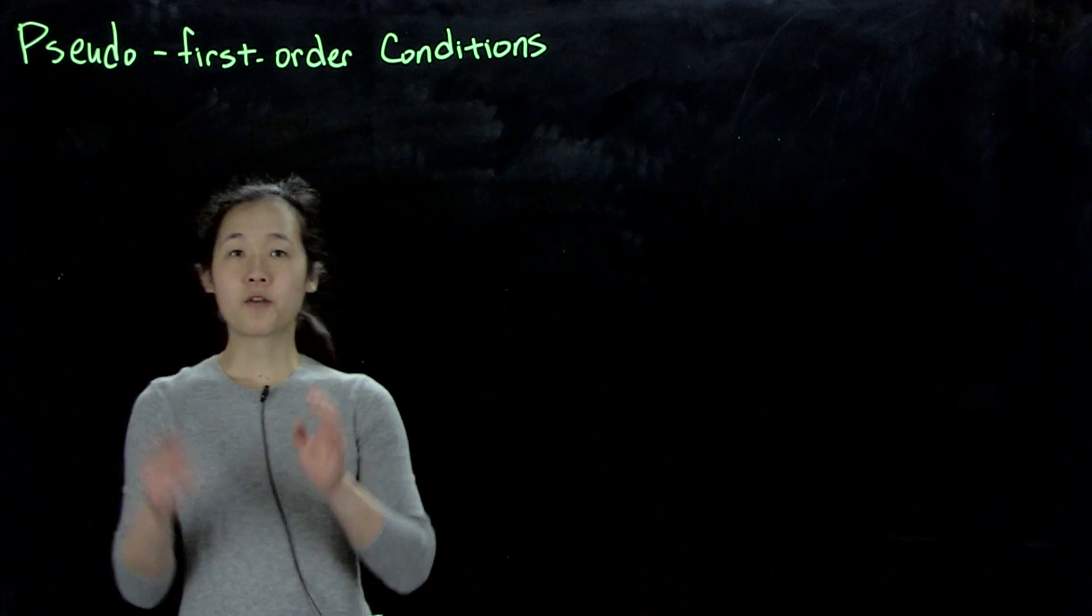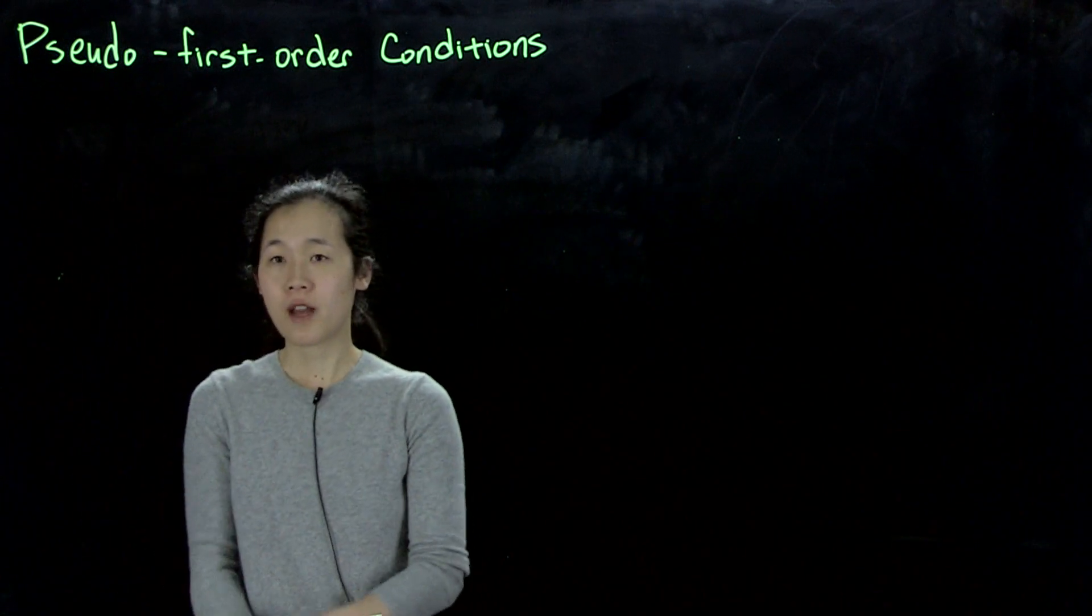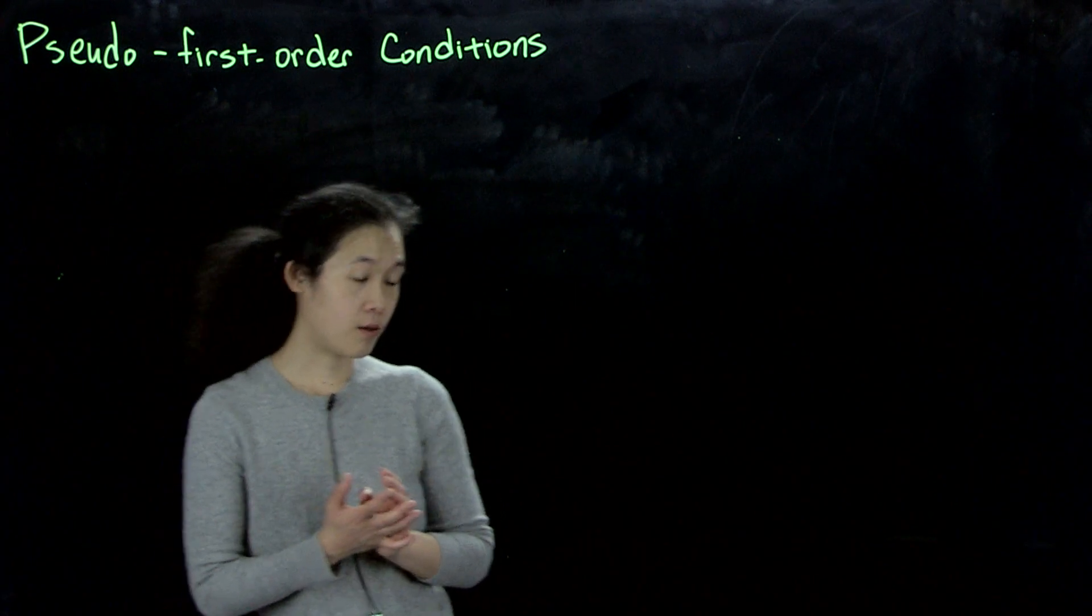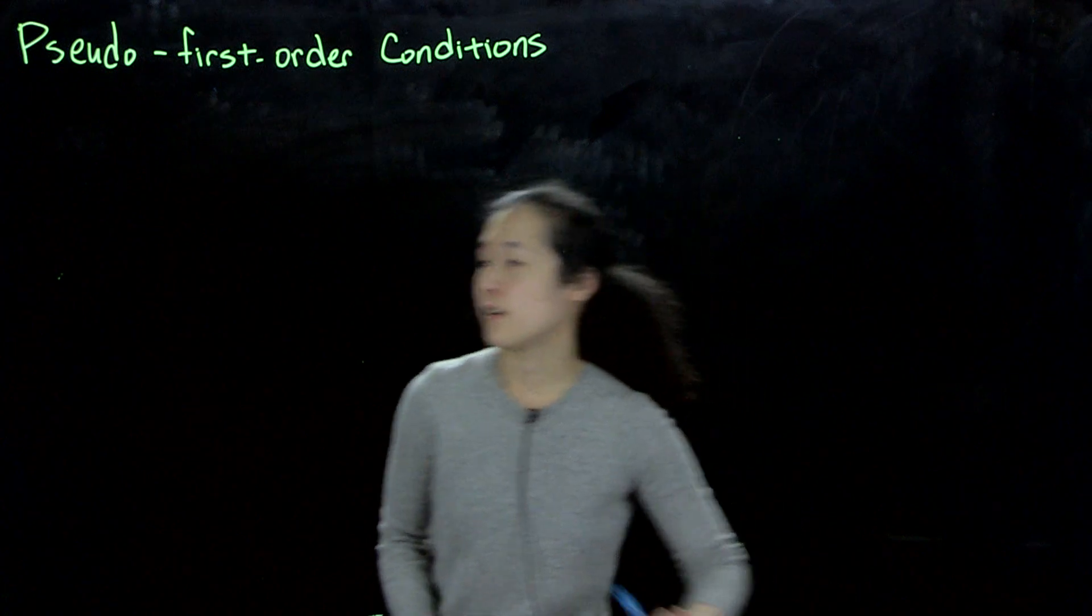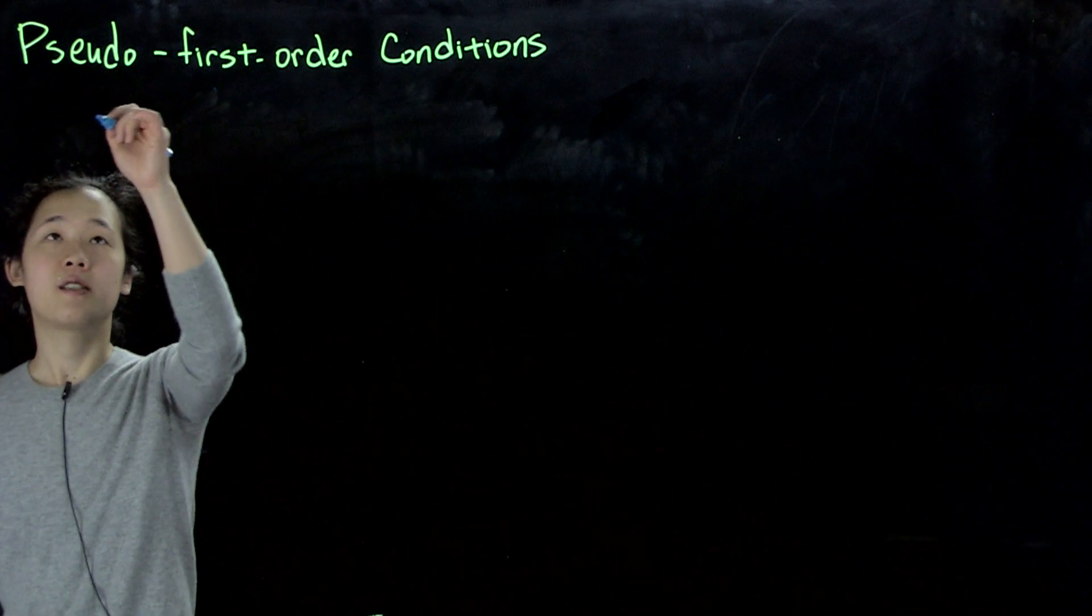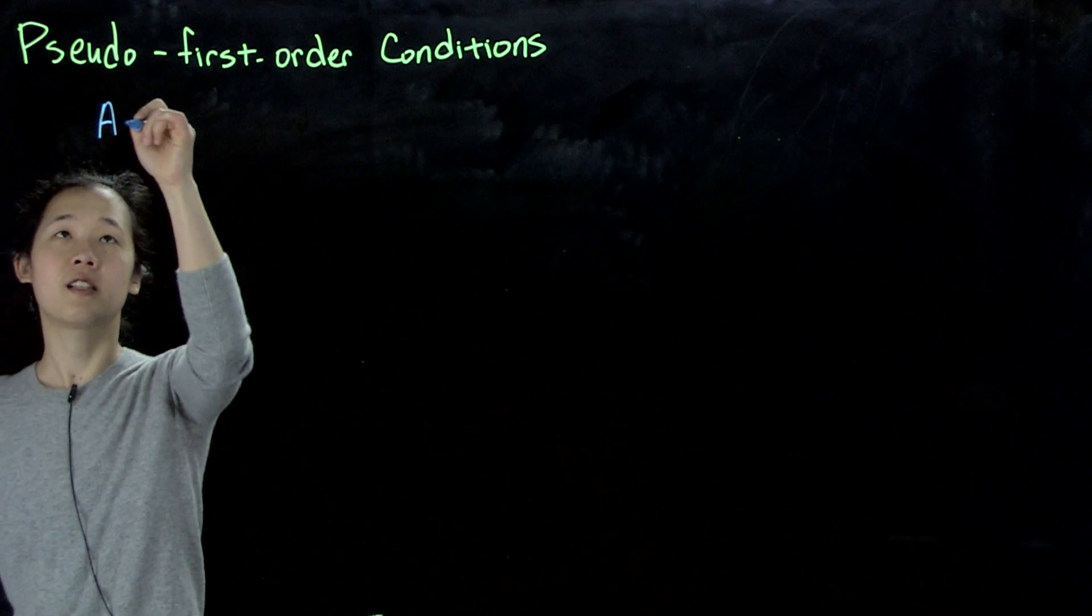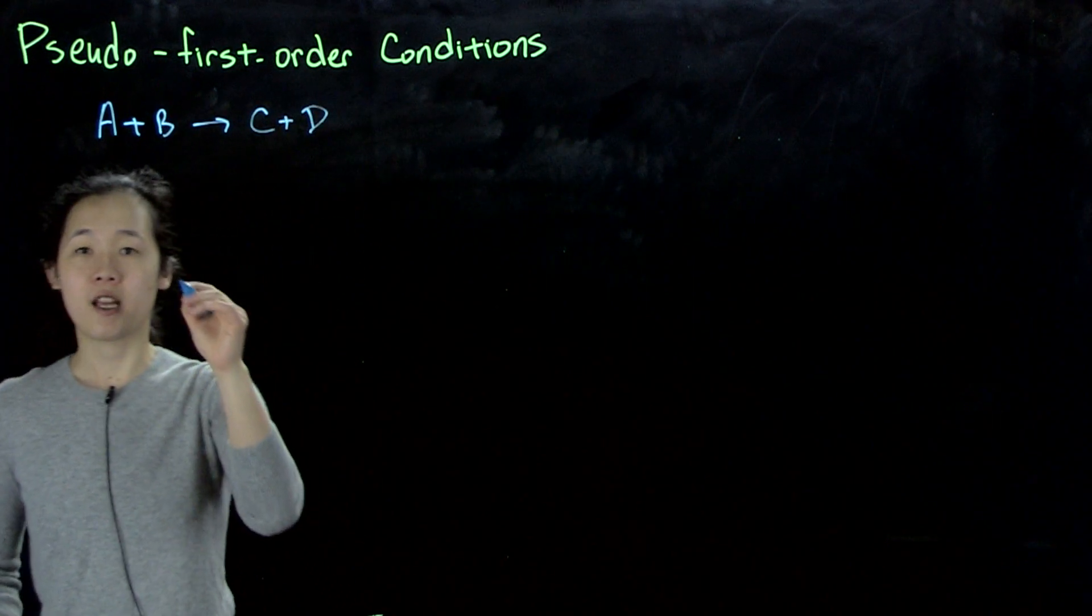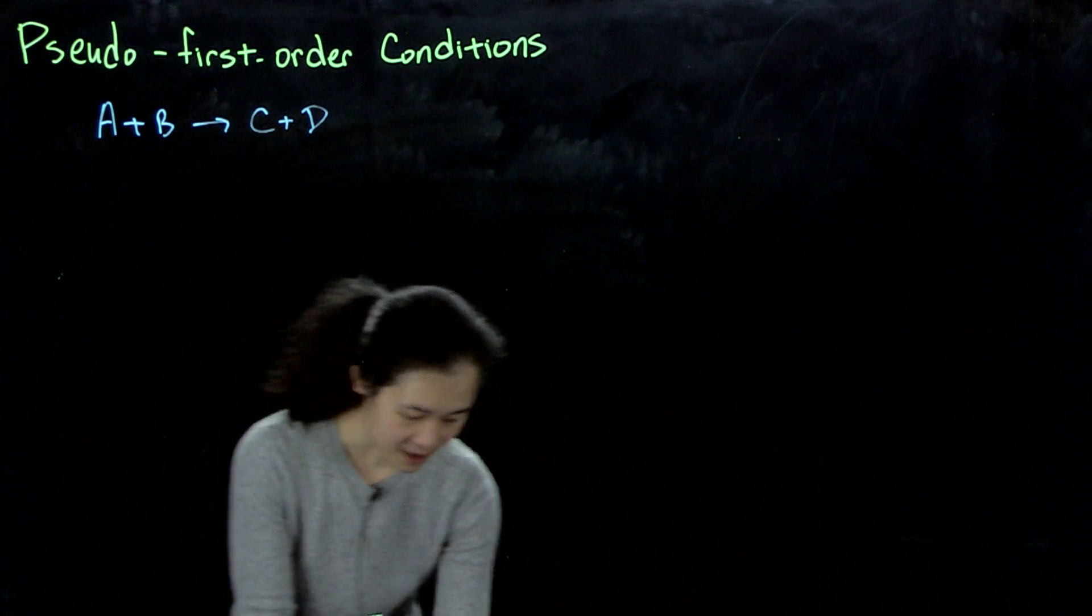Okay, last time we introduced pseudo-first-order conditions for deriving the rate law for a more complicated reaction with more than one reagent. And so for step one, what we did was for a reaction again A plus B going to C plus D and we have a rate. Let me change markers.